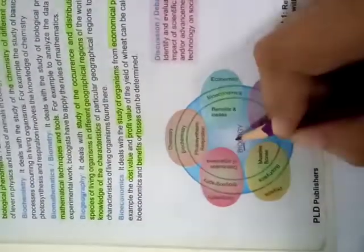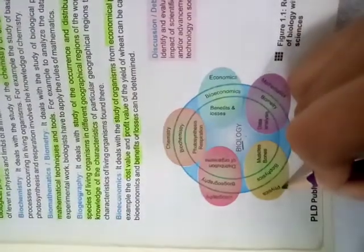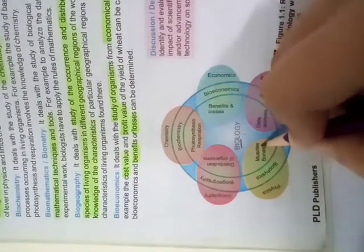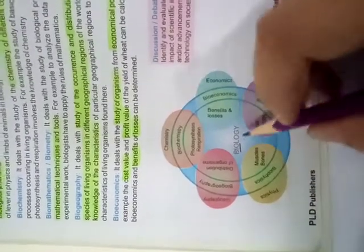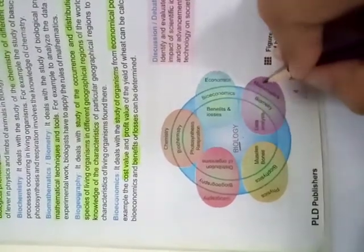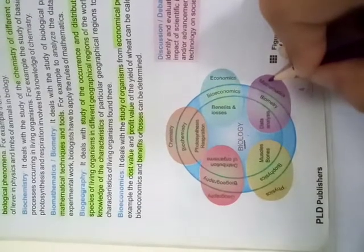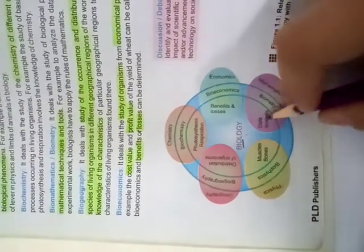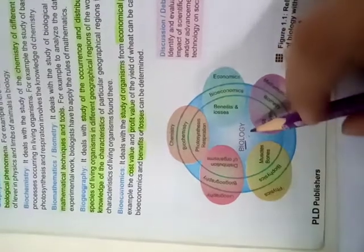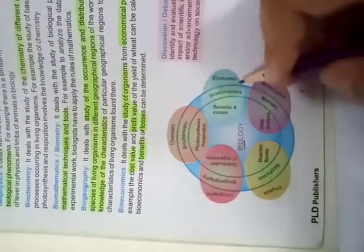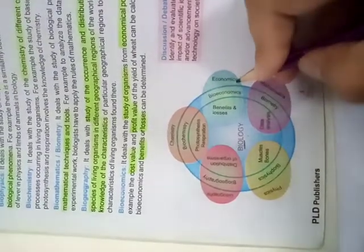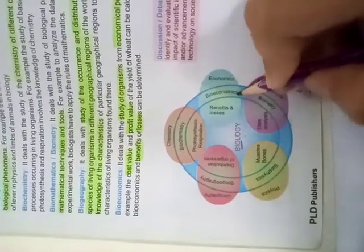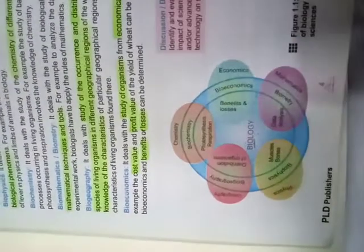When we combine bio and physics, it is called biophysics. When we combine bio and mathematics, it is called biometry, which involves data analysis. When we combine bio and economics, it is called bio-economics, which deals with benefits and losses.